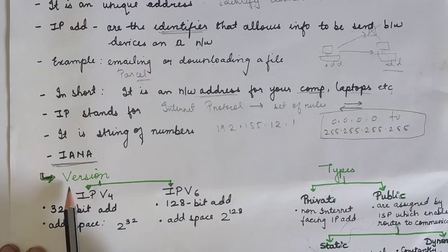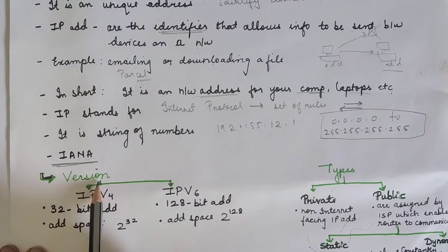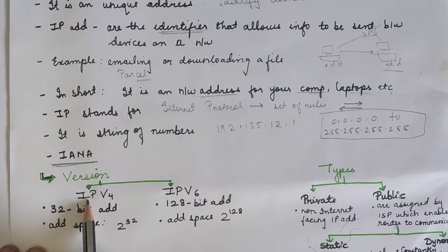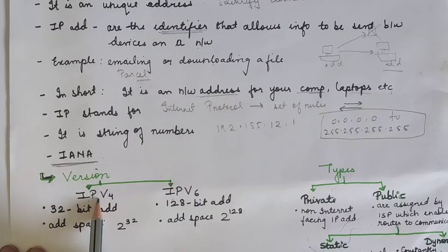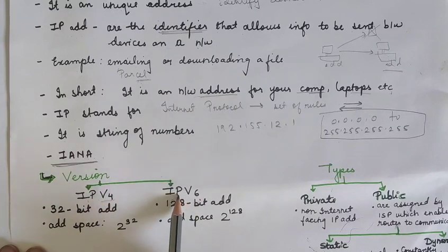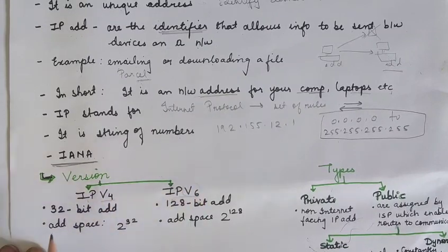Now, let's see what are the various versions of IP addresses. There are two main versions that is IPv4 and IPv6. Now, what is an IPv4? IPv4 is version 4 whereas IPv6 is version 6. Now, what is an IPv4?